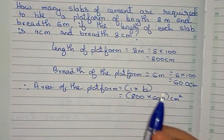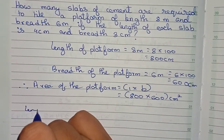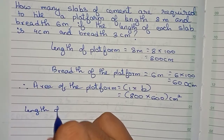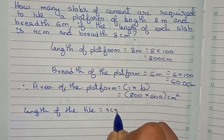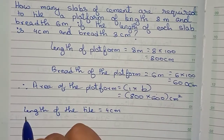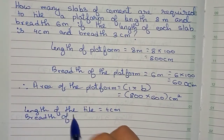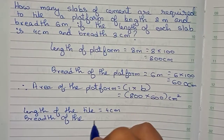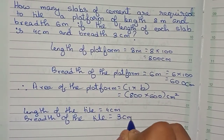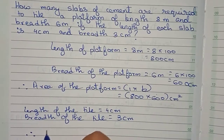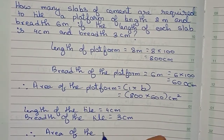Now I find the area of the tile. The length of the tile is equal to 4 centimeters, and the breadth of the tile is equal to 3 centimeters. Therefore, the area of the tile equals length into breadth.